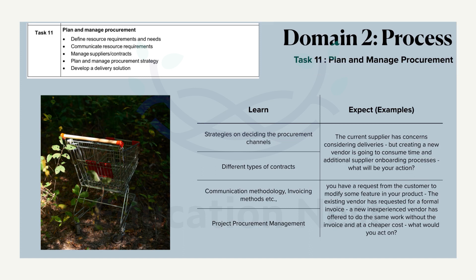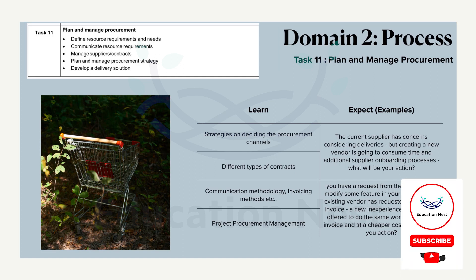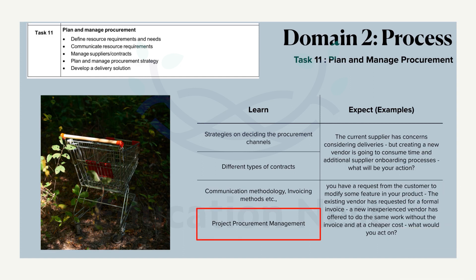Moving on to Domain 2, Task 11: Plan and Manage Procurement. This is directly linked to the Project Procurement Management knowledge area in the PMBOK Guide Sixth Edition. As a project manager, you have to support the planning and conducting of the procurement process, and provide suggestions to control project procurement.